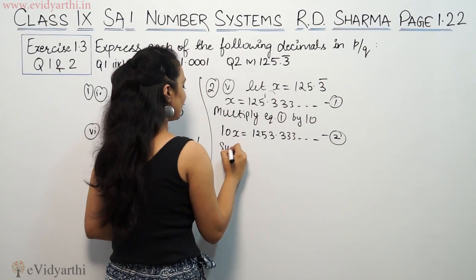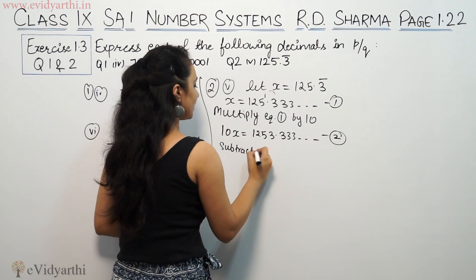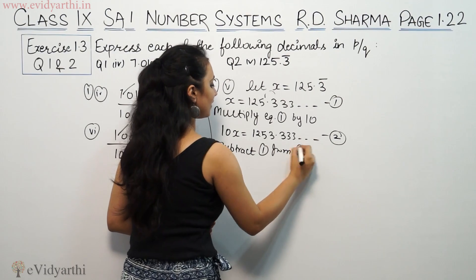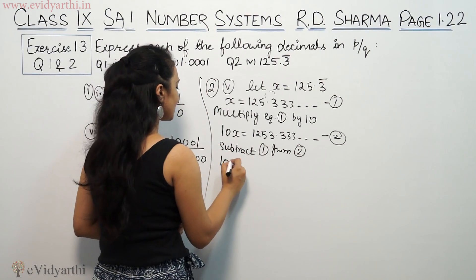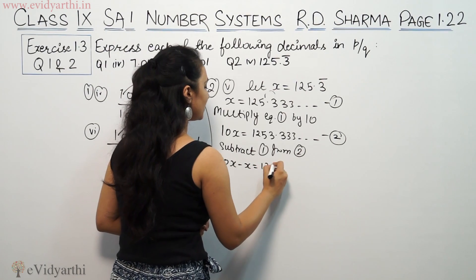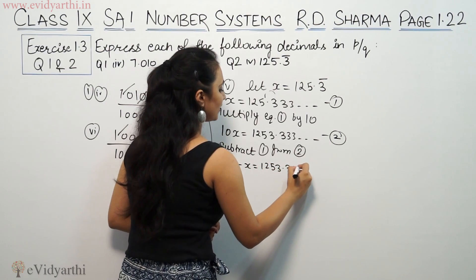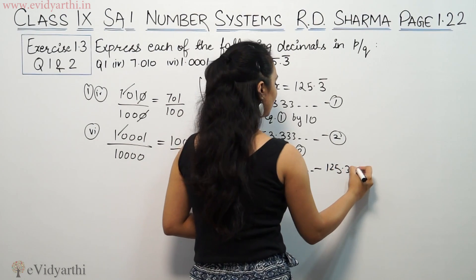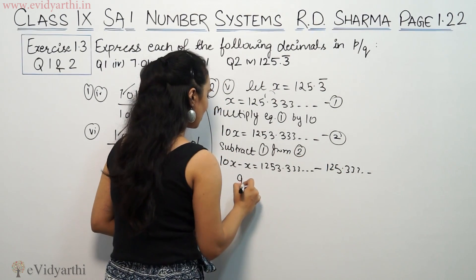Now we will subtract equation 1 from equation 2. This will be 10x minus x equals 1253.333... minus 125.333... So this is 9x.